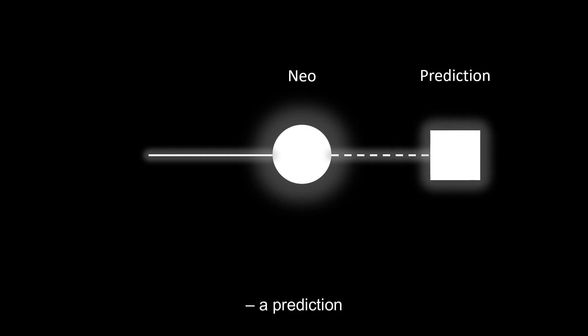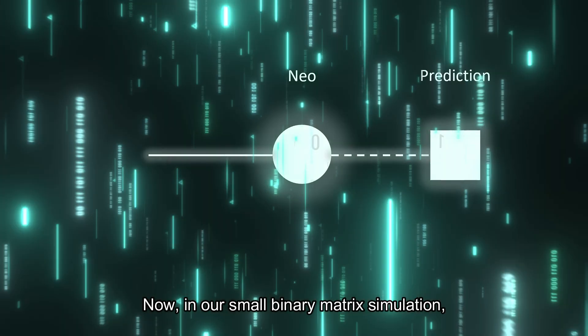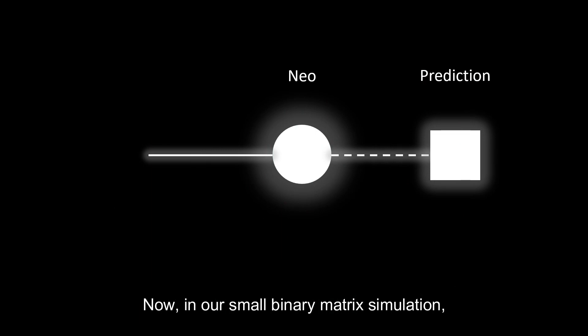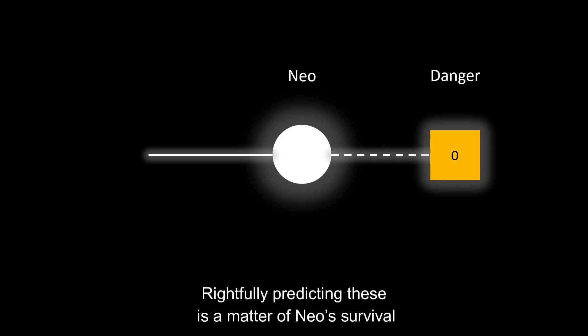A prediction. Now, in our small binary matrix simulation, Neo can make only two predictions: 0 or 1. In human language, let us say 1 means safety, while 0 means danger. Rightfully predicting these is a matter of Neo's survival.